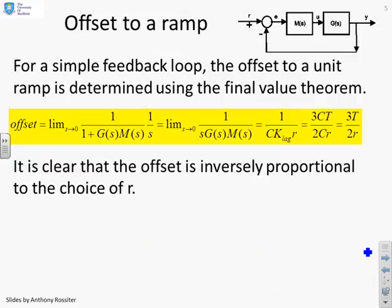How do we calculate the offset to a ramp? If we assume a simple compensator M and G with a feedback loop like this, then the offset to a unit ramp is determined using the final value theorem. The offset equals the limit as s goes to 0 of 1 over 1+G(s)M(s) times 1 over s. And that reduces to this formula here.